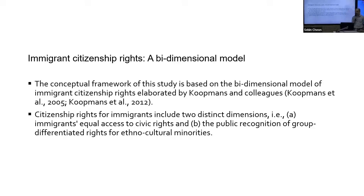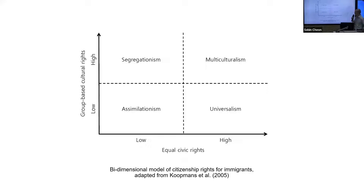The conceptual framework of my study is based on the bi-dimensional model of immigrant citizenship rights, elaborated by Kupmans and colleagues. In this model, citizenship rights for immigrants include two distinct dimensions: the first is immigrants' equal access to civic rights, and the other is the public recognition of group-differentiated rights for ethnocultural minorities. This model illustrates ideal-type regimes of immigrant integration, including universalism, multiculturalism, assimilationism, and segregationism.